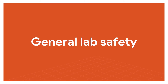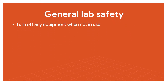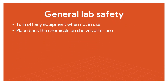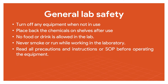For general lab safety: turn off any equipment not in use; place back chemicals on the shelf with labels after use; no food or drinks in the lab. Even though lab tables and counters are wiped down before each lab setup, temperature residues may be present on the tables. Do not smoke or run while working in the lab. Read all precautions and instructions in the standard operating procedure before operating the equipment.